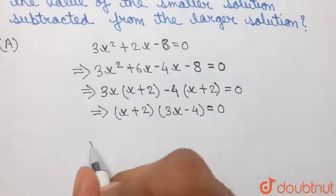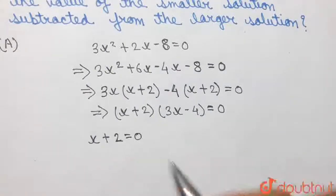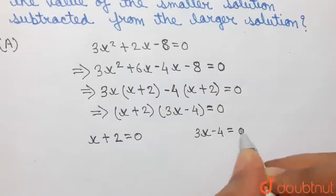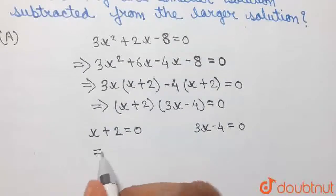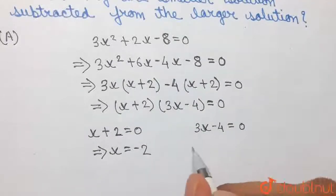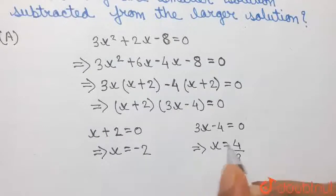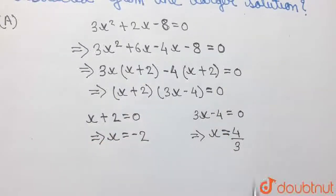The two solutions of this quadratic equation will be obtained by equating these two expressions x plus 2 and 3x minus 4 equal to 0. One solution will be obtained from x plus 2 equal to 0, whereas the other solution will be obtained from 3x minus 4 equal to 0. Taking 2 to the other side, we have x equal to minus 2, whereas in the other equation we have x equal to 4 by 3. So the two solutions are x equal to minus 2 and x equal to 4 by 3.